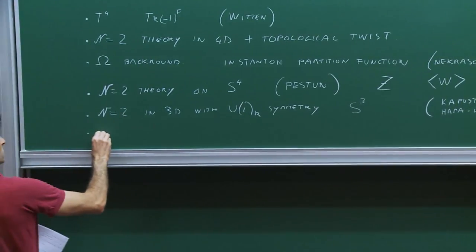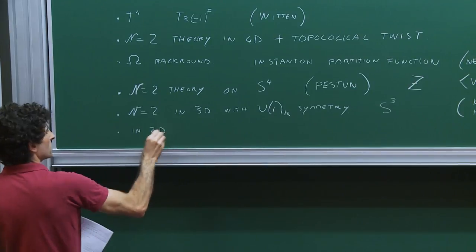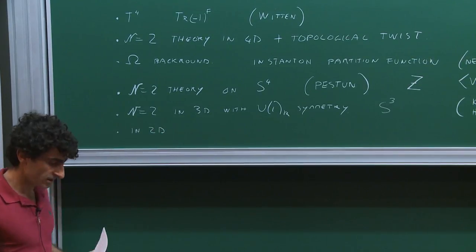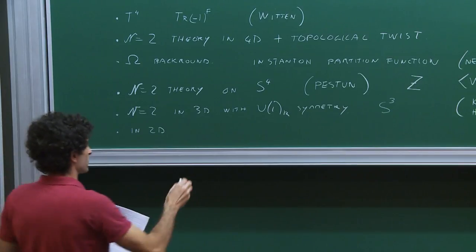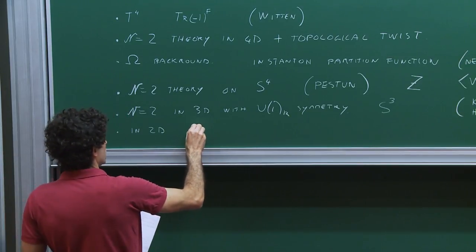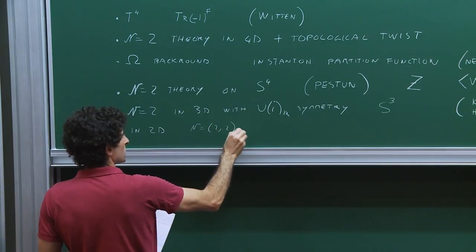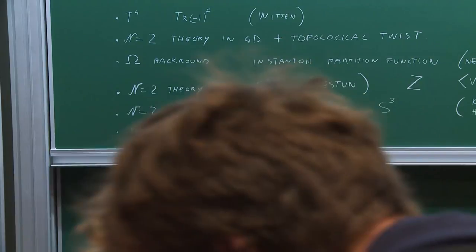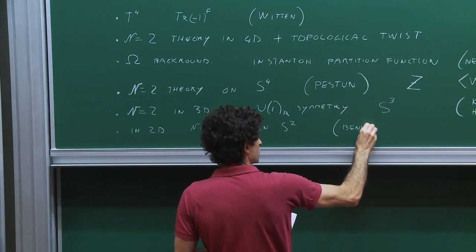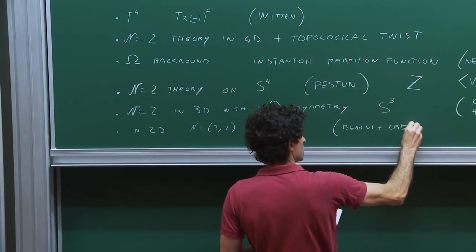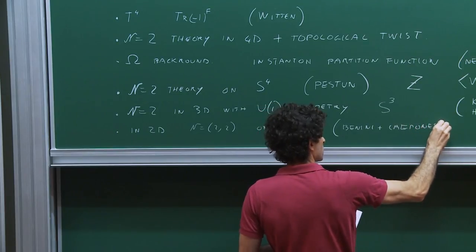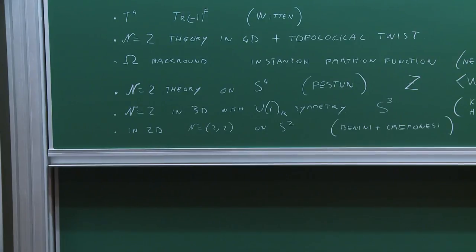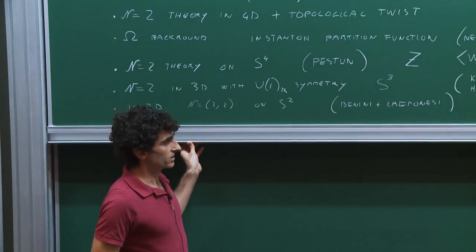In 2D, Francesco Benini, who is here, and Cremonesi considered N=(2,2) theories on the two-sphere. I suspect you will hear much more about this example in Francesco's lectures.